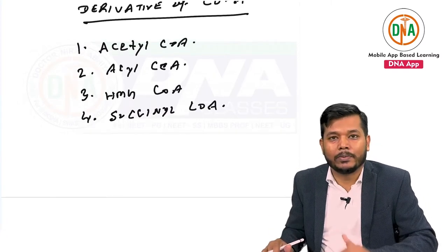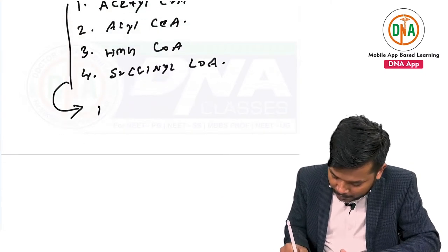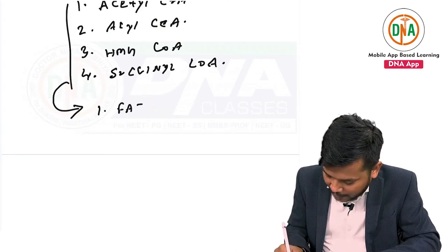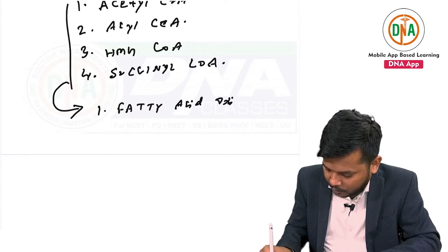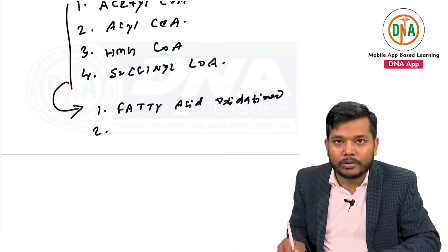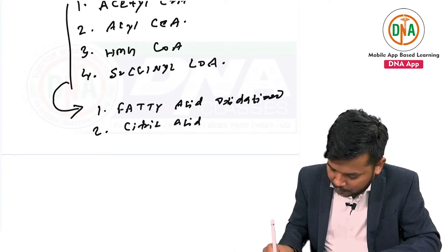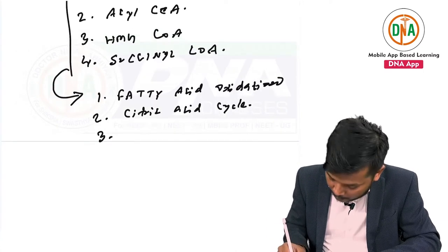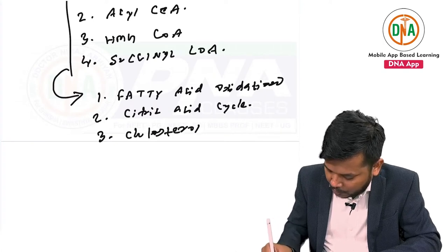Coenzyme A is basically involved in some important processes: fatty acid oxidation, the citric acid cycle, and synthesis of cholesterol.